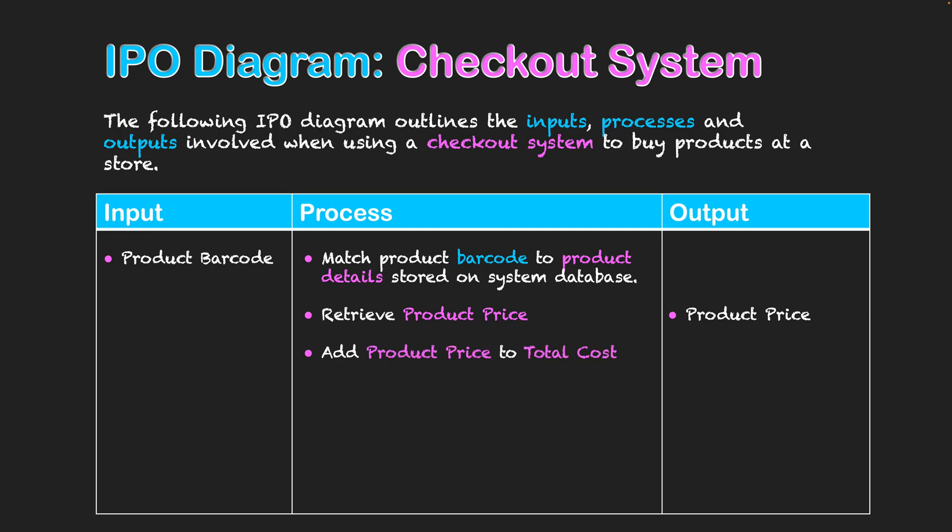Now that we've got that product price, the next step is to add that product price to the total cost. Upon first scanning, it will be the same as the original product price, but as I scan in more items that total cost will increase. These steps need to happen continually as we go through, because obtaining that total cost is going to be repeated.